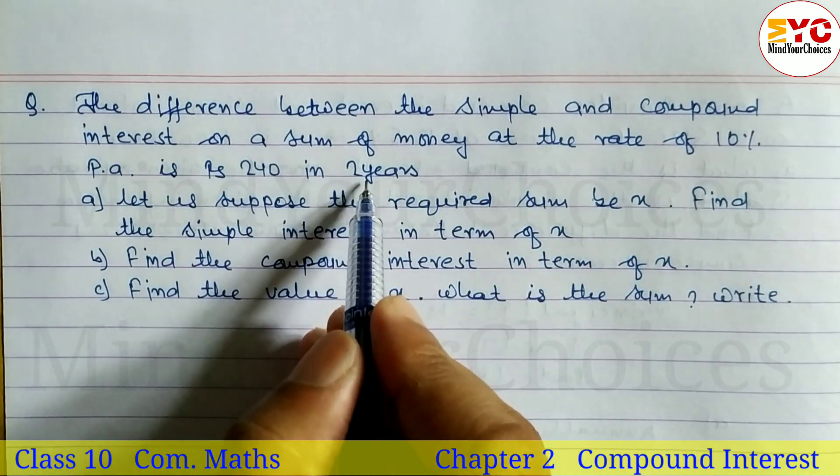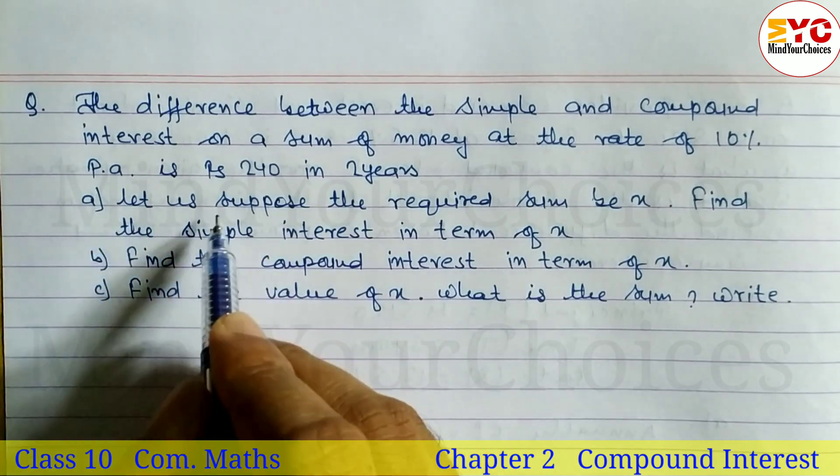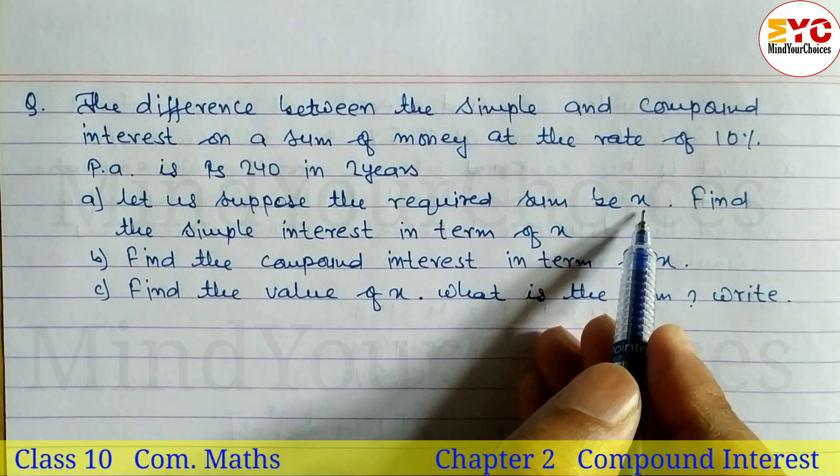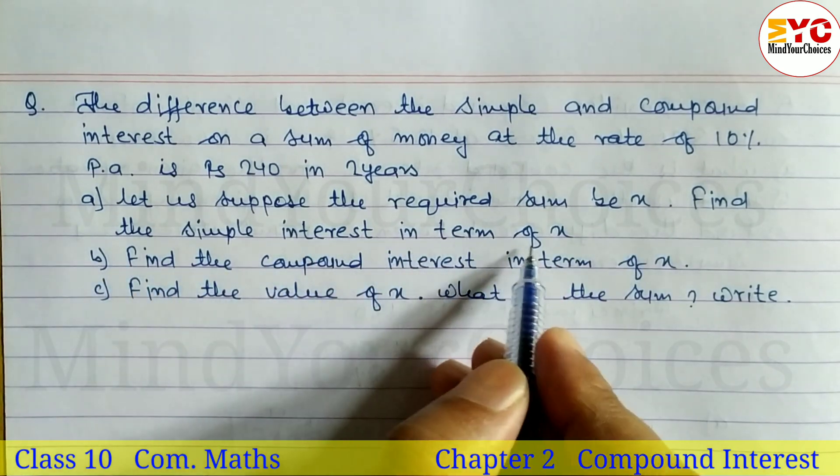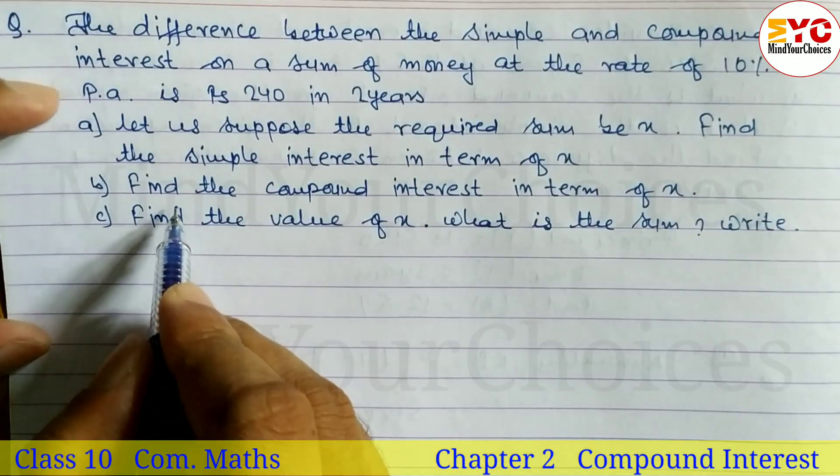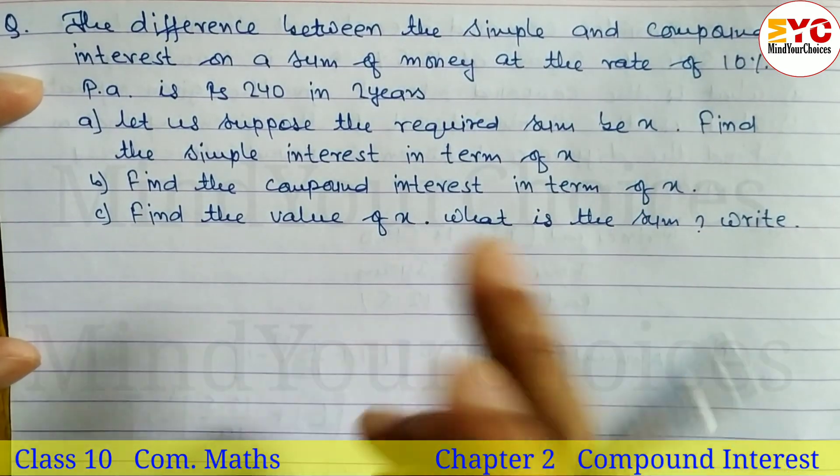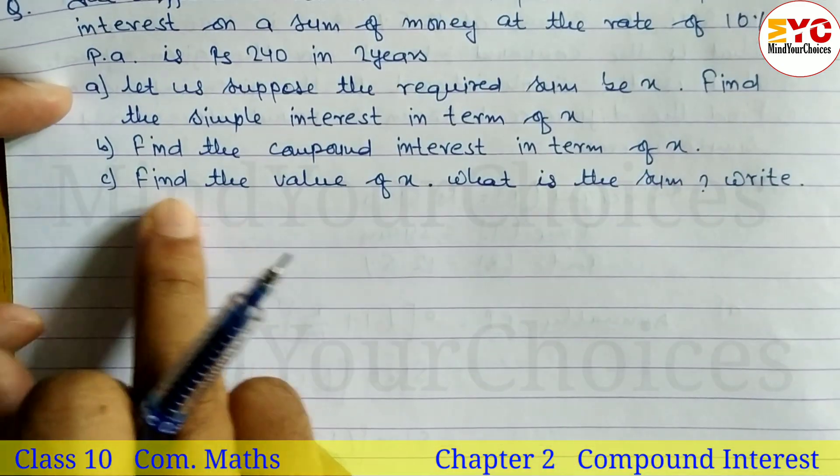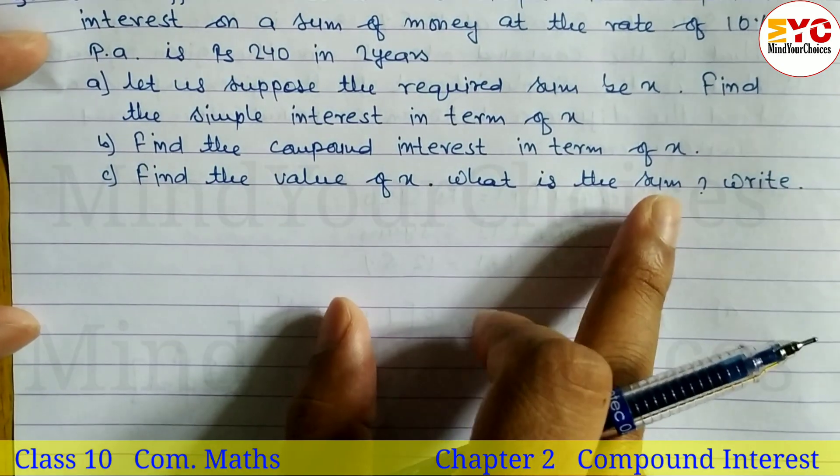Let us suppose the required sum be x, which is our principle. Part a: find the simple interest in term of x. Part b: find the compound interest in term of x. Part c: find the value of x. What is the sum, the principle?